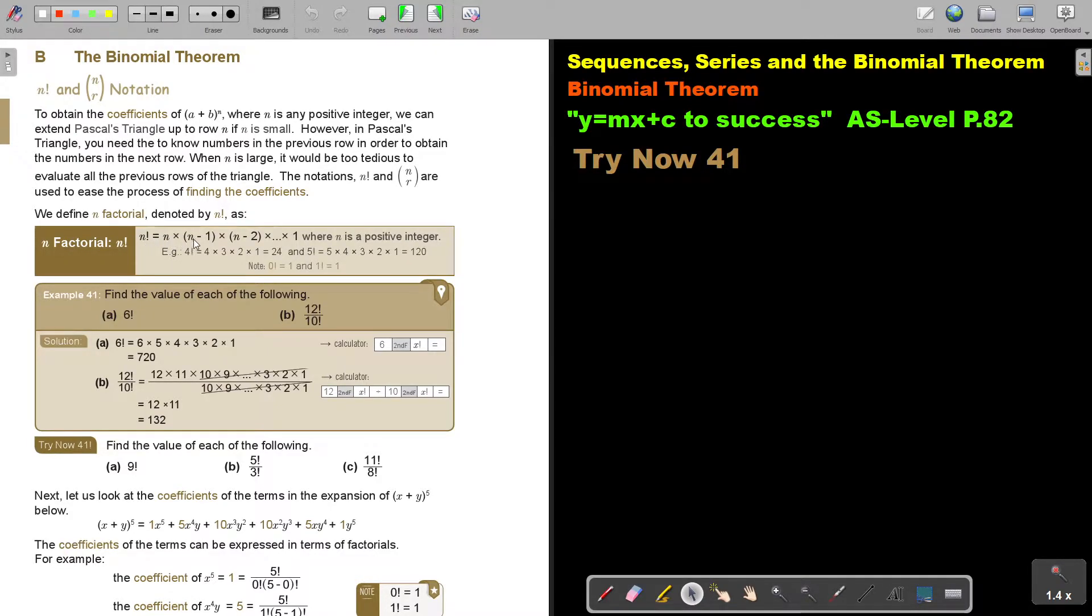It's n multiply n minus 1, multiply n minus 2, multiply and multiply 1, where n is a positive integer. For example, if you have 4, then it will be 4, and then 1 less 3, 1 less 2, until you come to 1, and then you multiply.